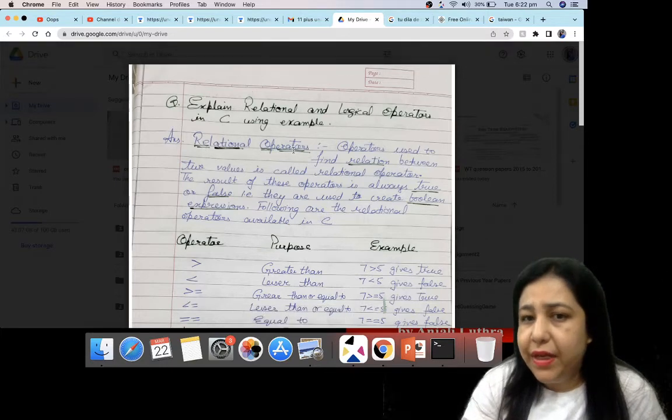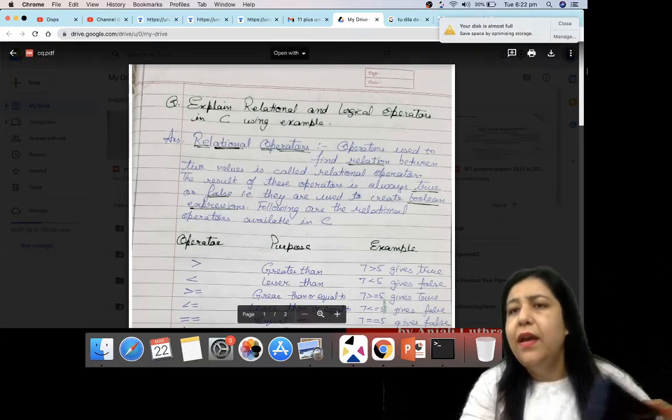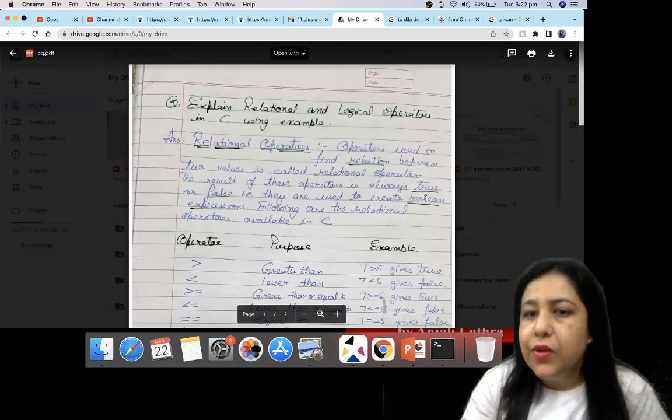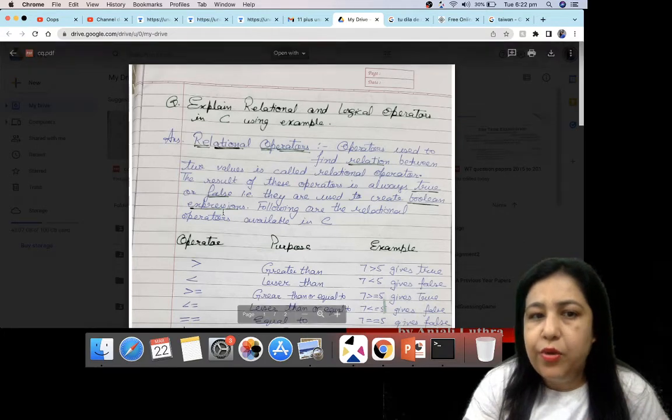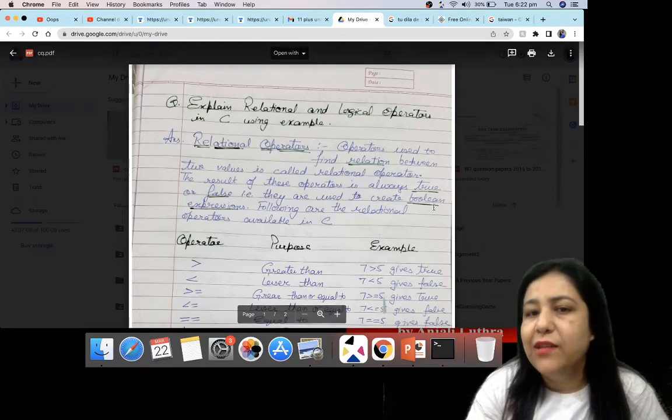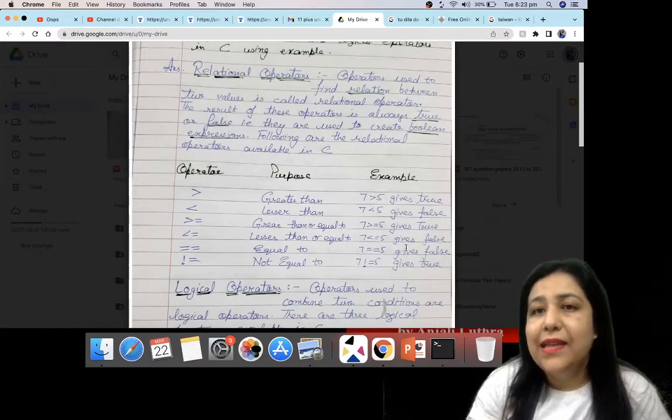In the answer, we have told you what are relational operators. Relational operators check whether there is a relation between two values or not. I have underlined true or false because whatever statement we make from it, the result is either true or false. Those expressions are called Boolean expressions.